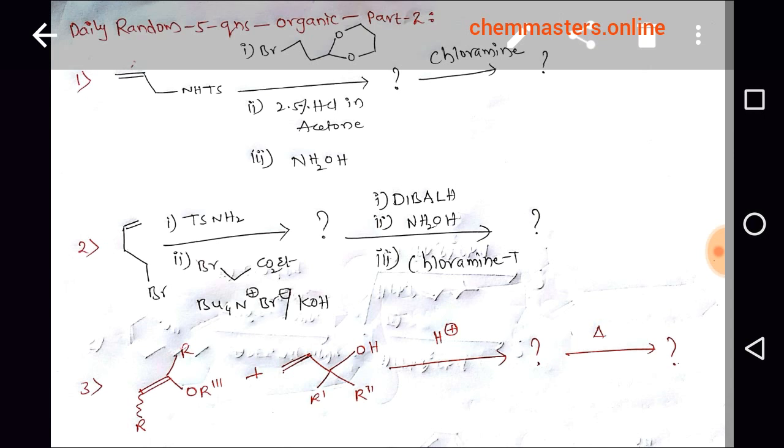Second question: tosylamine and alpha-bromoester with tertiary butyl ammonium bromide and base potassium hydroxide. Here, tertiary butyl ammonium bromide acts as a phase transfer agent. What is the product? Then if we add DIBAL-H (reducing agent), ammonium hydroxide, and chloramine-T, what is the final product?